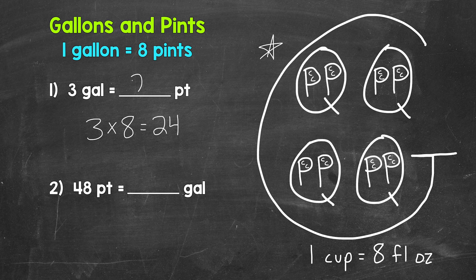Three gallons equals 24 pints. So again, when we go from gallons to pints, multiply by eight.